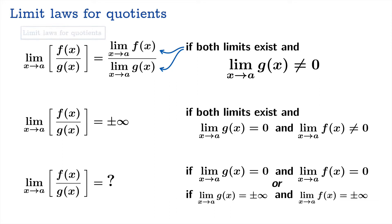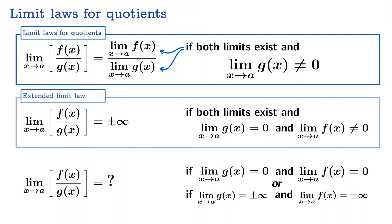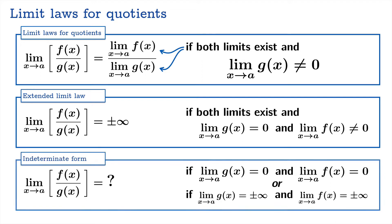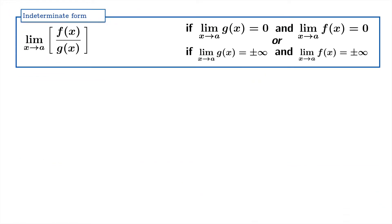So we have the limit law for quotients, the extended limit law for quotients, and then the case of most interest to us right now: the indeterminate form. Let's look at three examples. We're not going to derive the limits — we'll just show a graph and assert them, then revisit them in light of L'Hôpital's rule to see how to make short work of each.